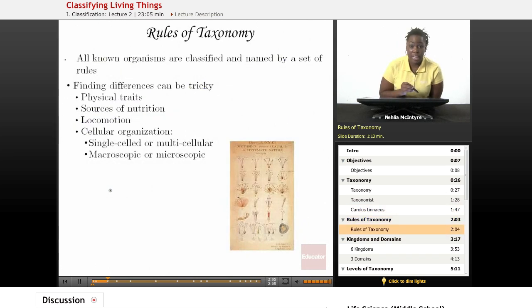So there are certain rules about how to classify organisms. And the rules of taxonomy include, of course, all known organisms are classified and named by a set of rules. And finding differences can be tricky. They can be classified by physical traits, sources of nutrition, locomotion, or how they move.